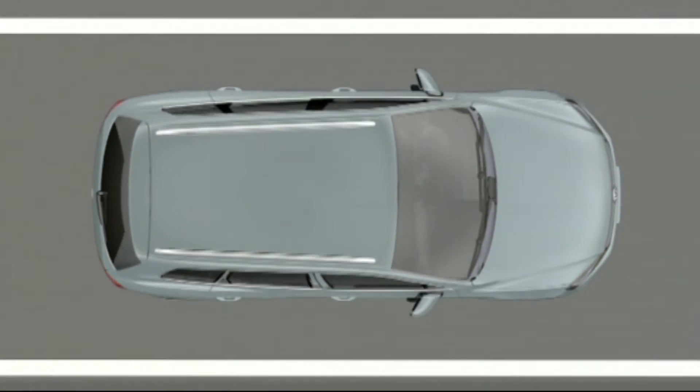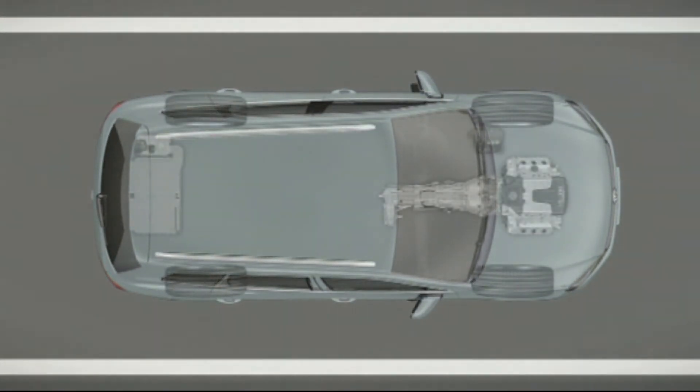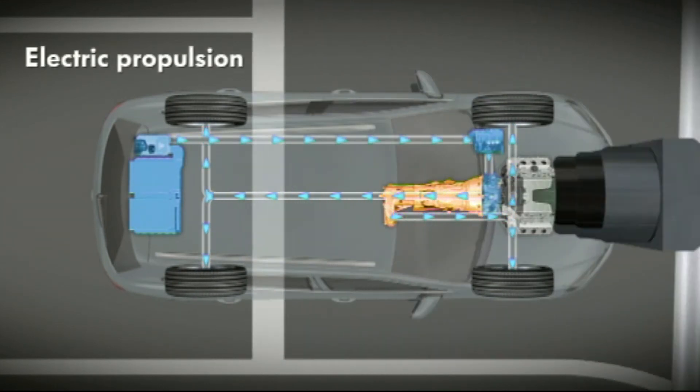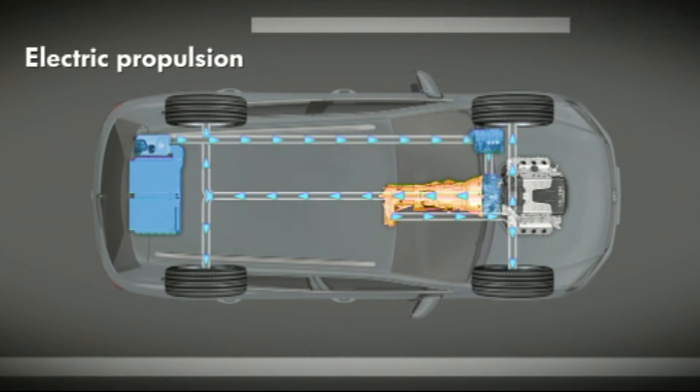When the driver gently accelerates, the new Touareg hybrid starts off under electric power. The electric motor alone drives the new Touareg up to a speed of 50 kilometers per hour. The TSI petrol engine remains decoupled by means of the separating clutch and does not consume any energy.